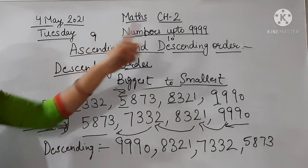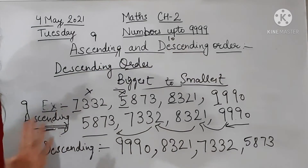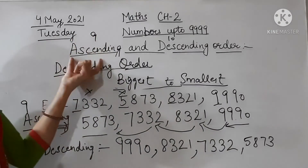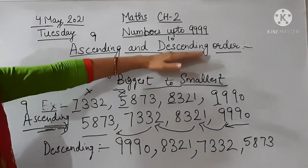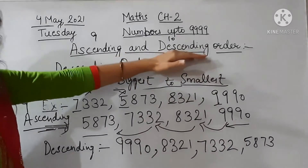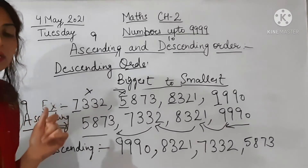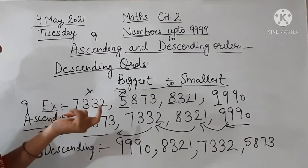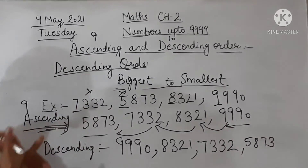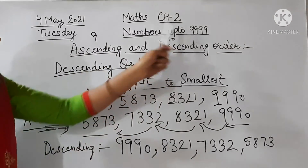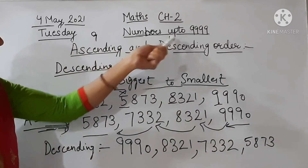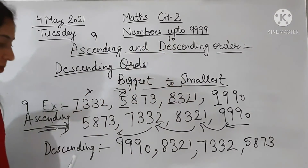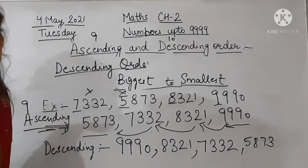So 9 is smaller and 10 is bigger. Ascending has 9 letters — the smaller count — and we start ascending from the smallest number. Descending has 10 letters — the bigger count — and we start descending from the biggest number. This is a trick so you don't get confused between ascending and descending. This completes our topic.